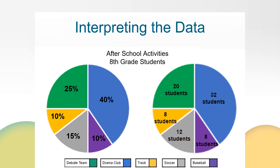Remember, graphs always tell a story. You might have thought that the drama club should receive the most money because it has the most student interest. Or maybe you're wondering how to recruit more people for baseball or track. How could you use the data to convince your principal that drama club deserves the most funding because it has the largest number of students, or that baseball should get more funding because there doesn't seem to be much interest and you want the program to grow?